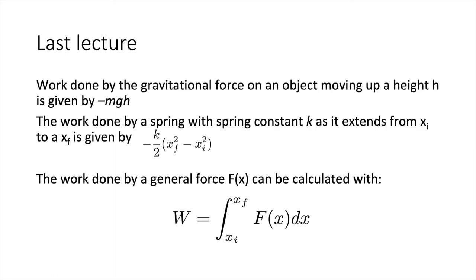A quick recap of the most important ideas from the last lecture. Work done by the gravitational force on an object moving up a height h is given by minus mgh — negative because the gravitational force acts down while the object moves up. The work done by a spring with spring constant k extending from xi to xf is minus k/2 times (xf² minus xi²). We can also calculate work done by a general force f(x) using the integral from initial to final position of f(x) dx.